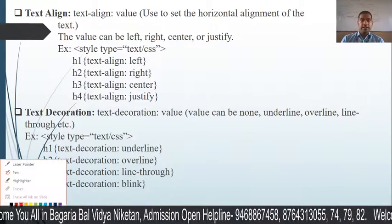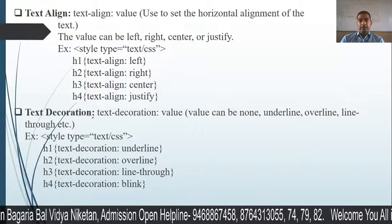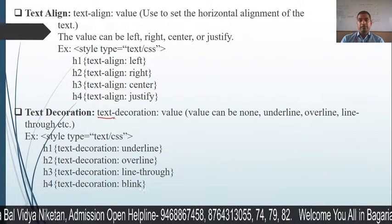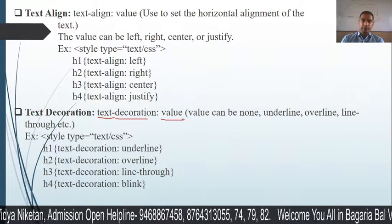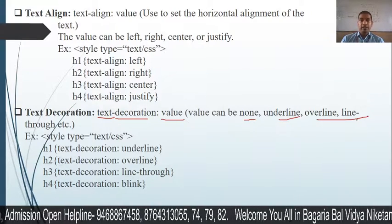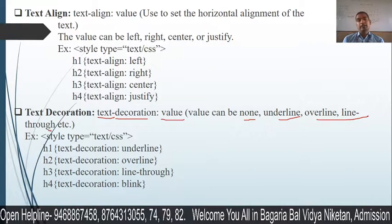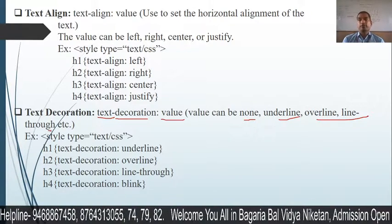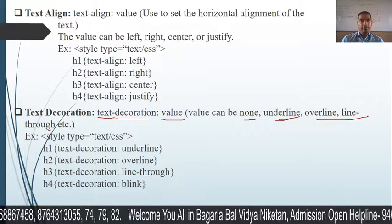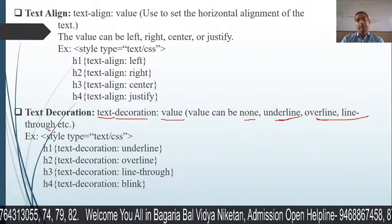The next text property is text decoration. The syntax is: text-decoration, then a value. The value can be none, underline, overline, line-through, or blink.